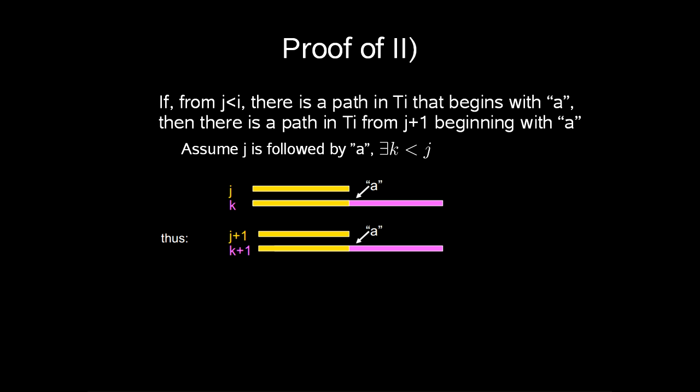For our second part, we assume j is followed by an a. Then there exists k less than j such that j is a prefix of k, where j is followed by the character a. Thus, j plus 1 is a prefix of k plus 1, and at the same point we will still have the character a. Hence, j plus 1 is followed by an a.